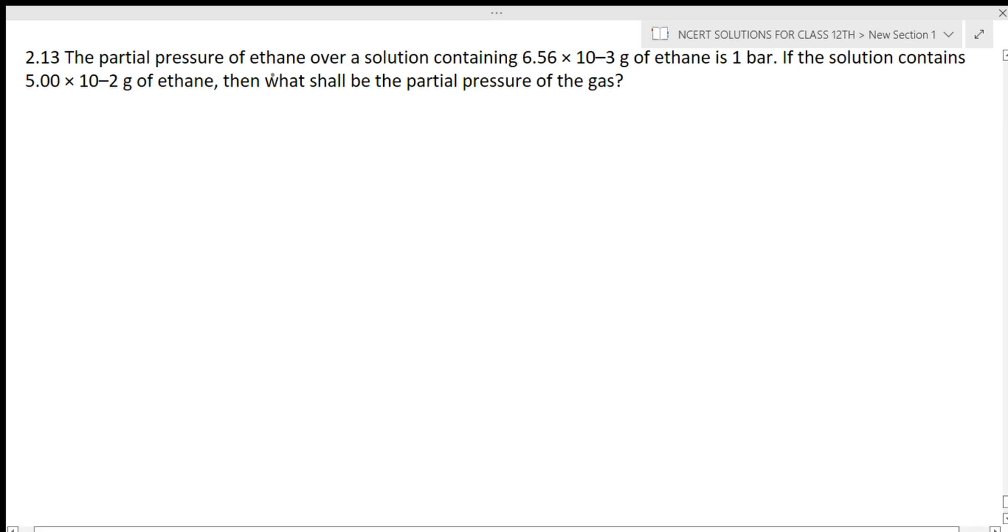The next question is: the partial pressure of ethane over a solution containing 6.56 × 10^-3 grams of ethane is 1 bar. If the solution contains 5 × 10^-2 grams of ethane, then what shall be the partial pressure of the gas?